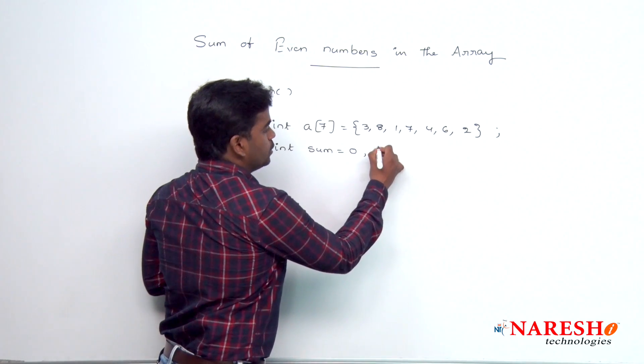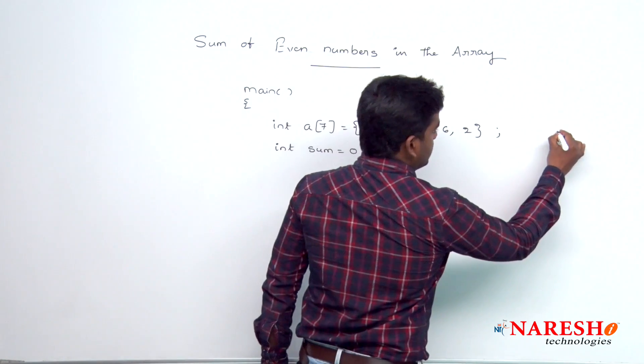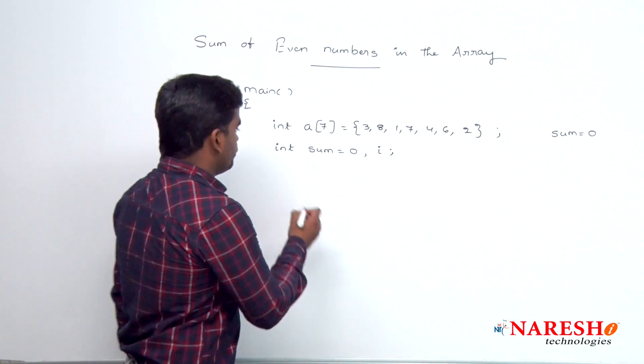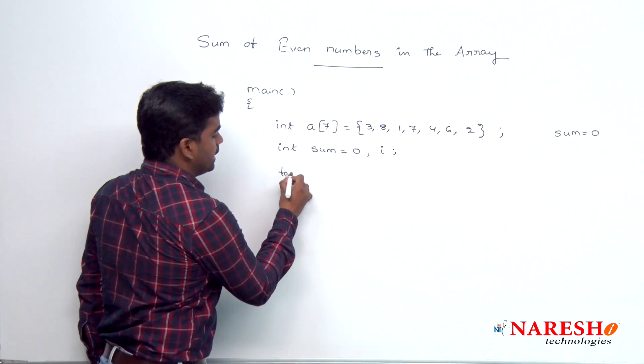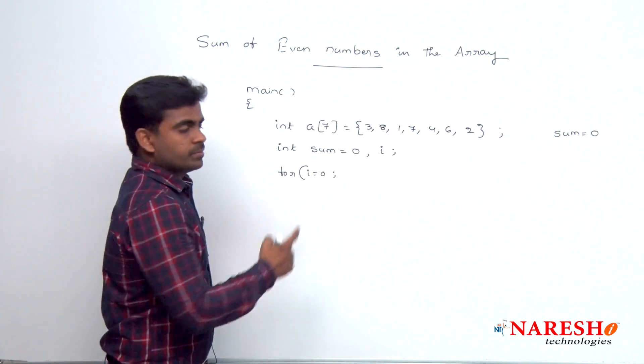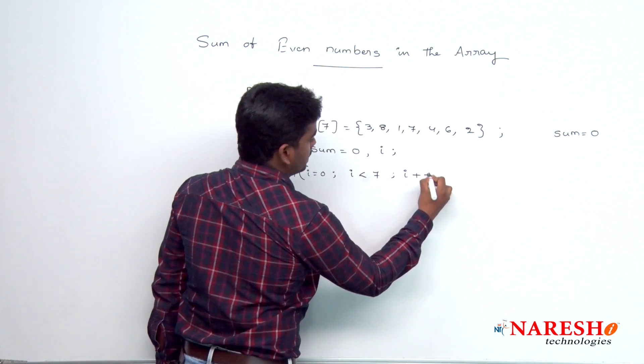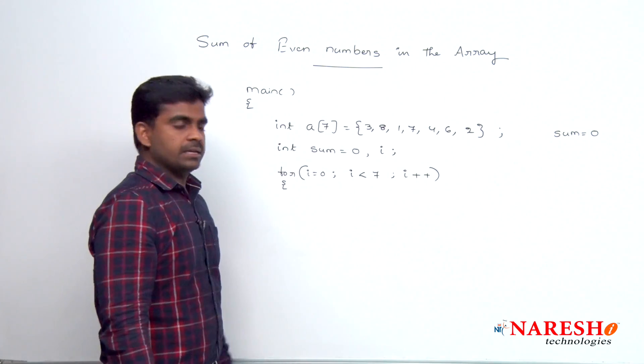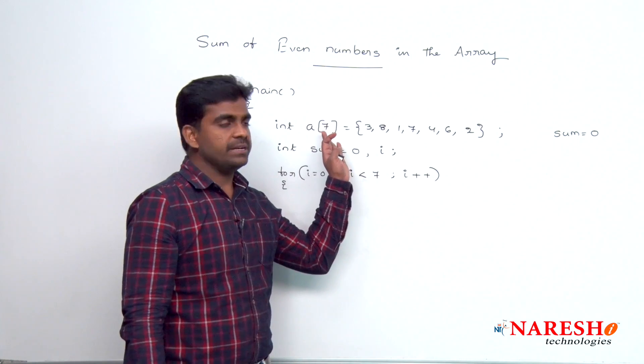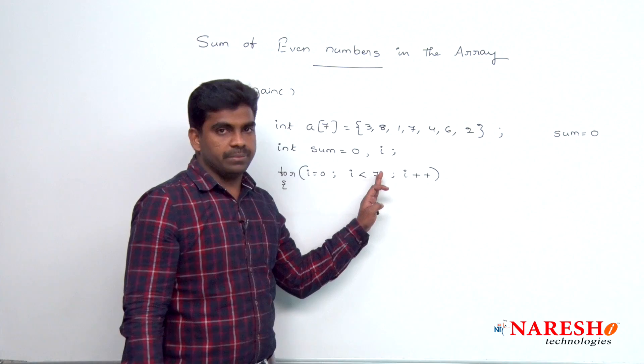And to repeat that loop, we are declaring one variable i. Here first sum gets memory, is initialized with 0. Here i value starts with 0, i is less than 7, up to size and i plus plus. We are repeating from 0 to 6, because size is 7, index 0, 1, 2, 3, 4, 5, 6, up to 6 it will be repeated.